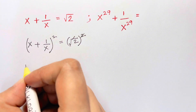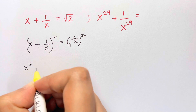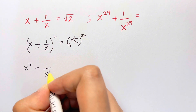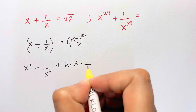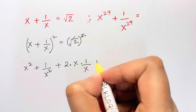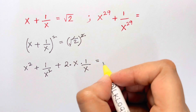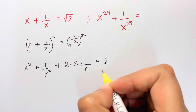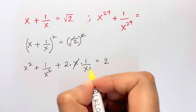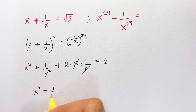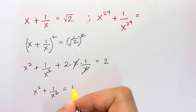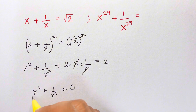Expanding using (a + b)², we get x² + 1/x² + 2·x·(1/x) equals 2. The x's cancel in the middle term, leaving x² + 1/x² + 2 = 2.